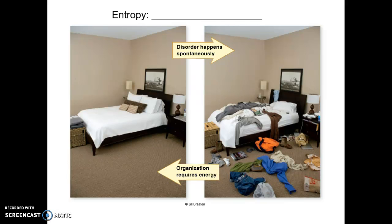Systems tend to go towards disorder spontaneously. Here's your bedroom — nice and neat and organized on Monday morning, but by Wednesday or Thursday it's in chaos, a complete mess, and it seems like it just happens without even trying. That's disorder. That is the direction universal entropy is moving towards. Overall, entropy or disorder in the universe is increasing. For it to go the other direction — towards organization — requires the input of energy. It's a lot harder to become organized than it is to become disorganized.